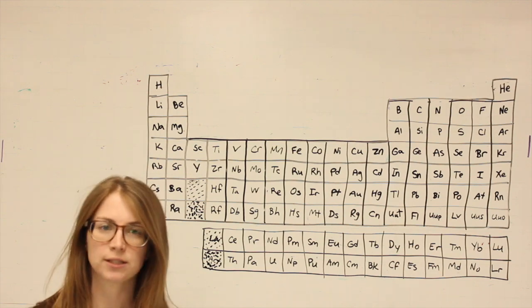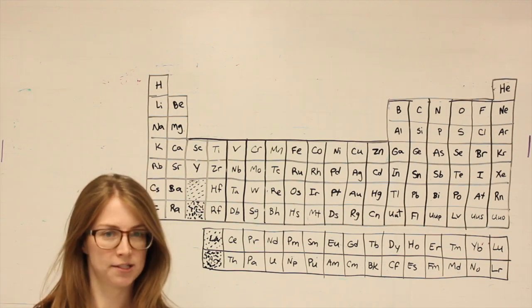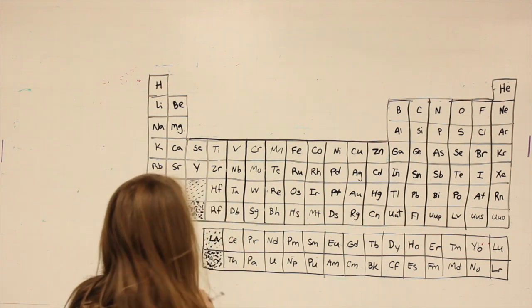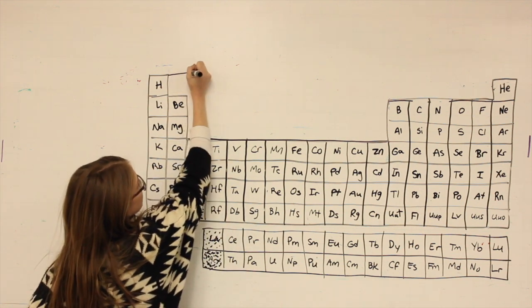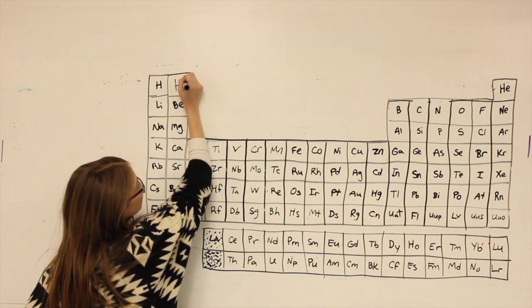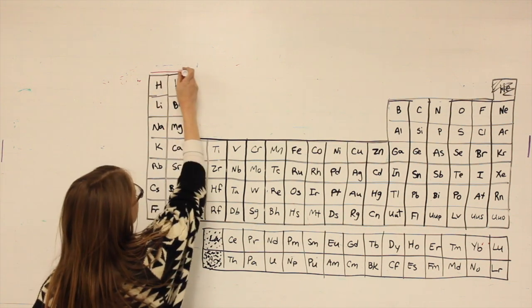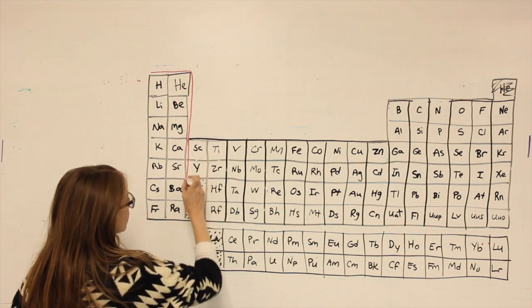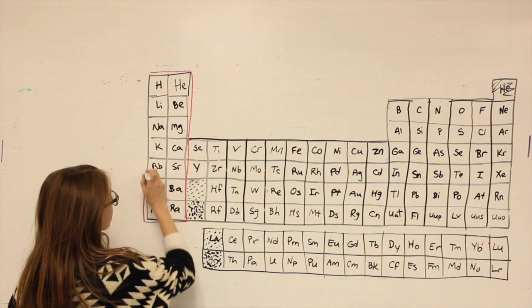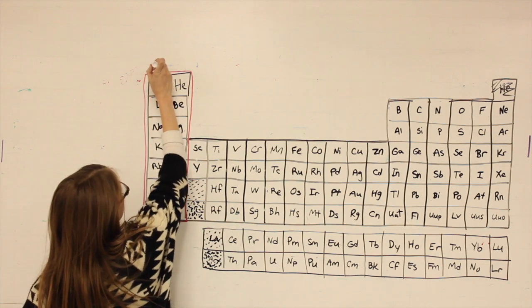To write out electron configurations, we want to make a few adjustments. We want to pretend that helium is right next to hydrogen, so I'm going to go ahead and move helium over there. I'm highlighting in red those first two columns including helium. That is our S-block.